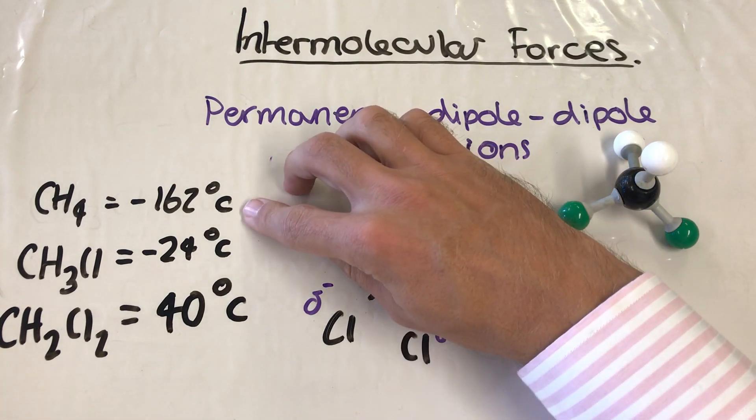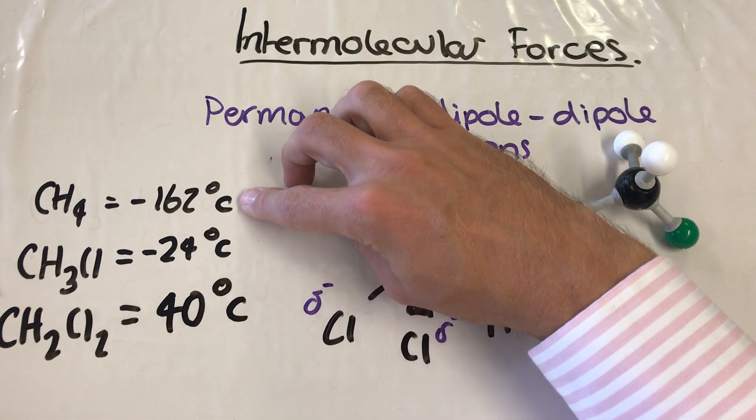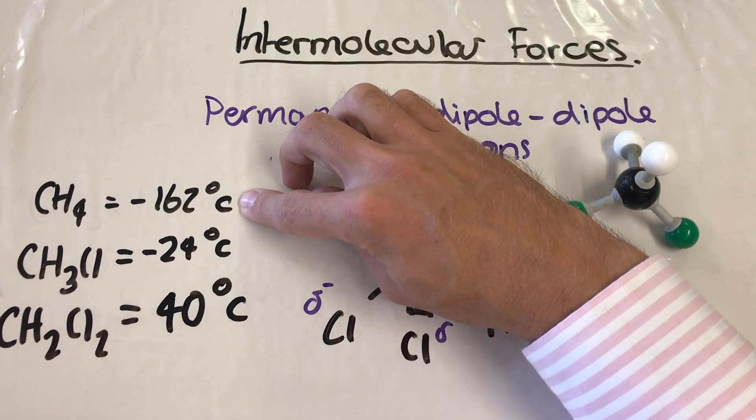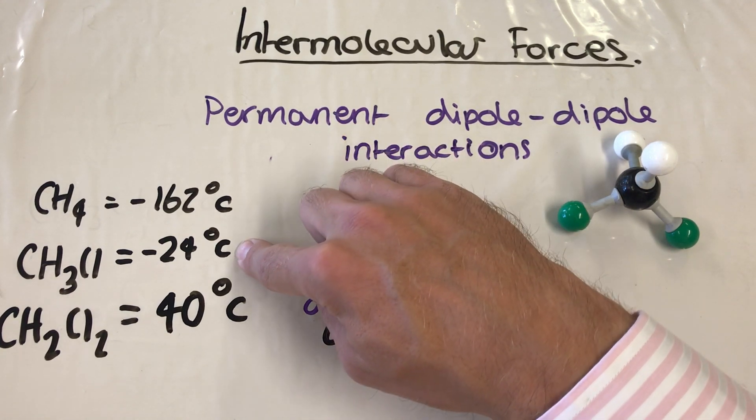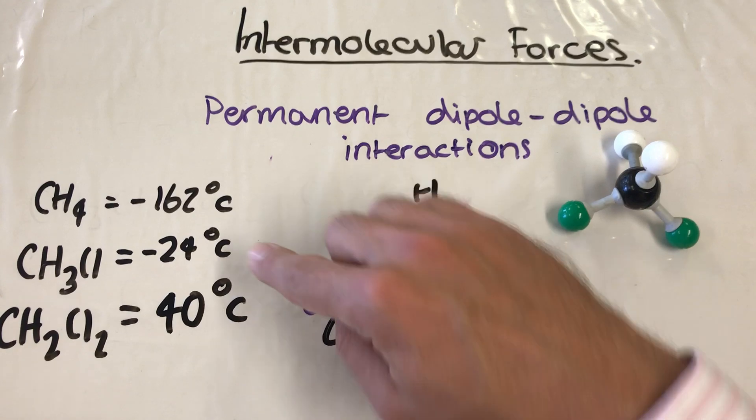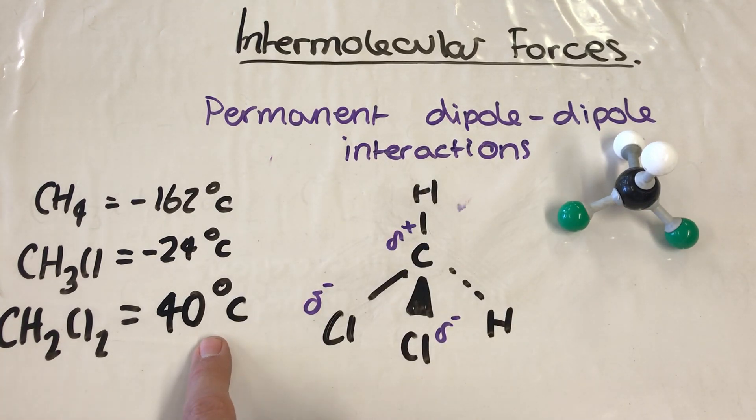Now again, you've got a significant increase here from a molecule which only has the induced dipole-dipole interactions to chloromethane, which has a single polar bond, up to dichloromethane, which has two polar bonds and therefore has stronger intermolecular forces.